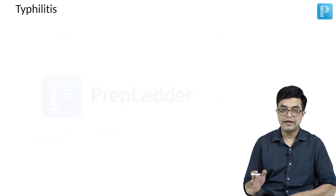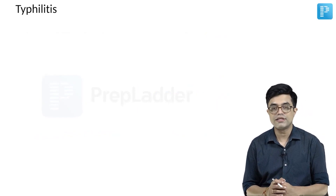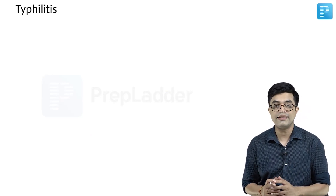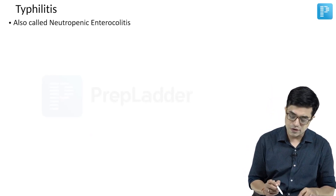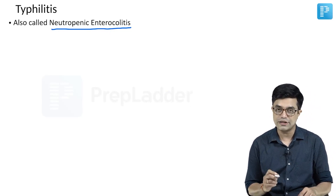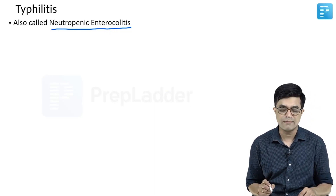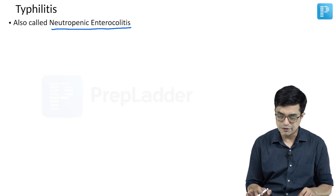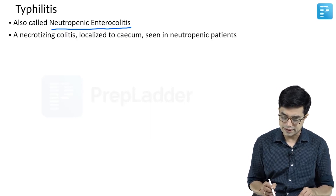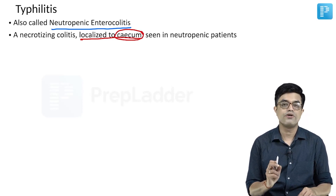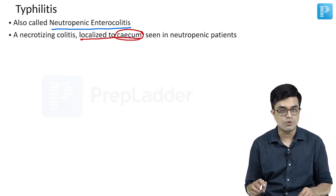Let us now start with the individual emergencies. The most important abdominal oncological emergency is Tiflitis. Tiflitis is also called neutropenic enterocolitis because it is seen in neutropenic patients. There is inflammation of the intestine, particularly the colon. It is a necrotizing colitis localized to the cecum in the majority of patients. The cecum is important and it is seen in neutropenia.